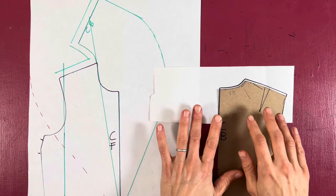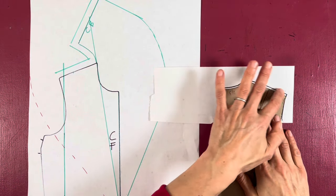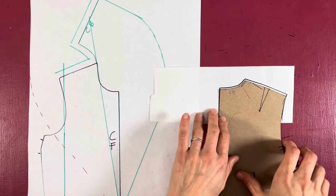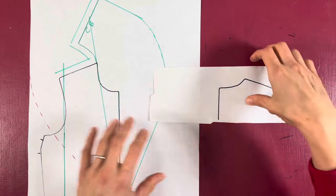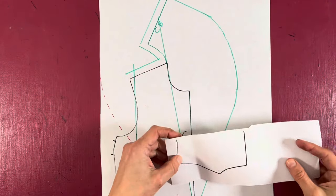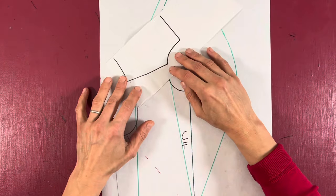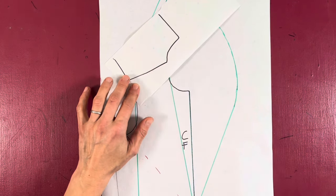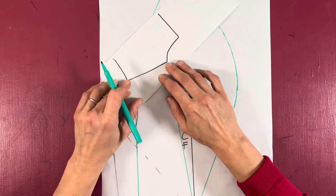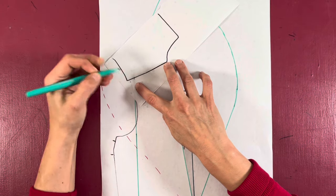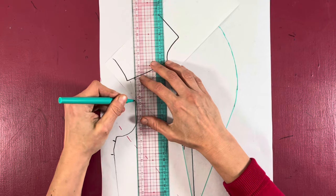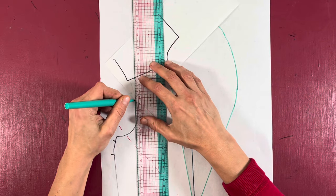On a small separate piece of paper, trace around your back. You only need the top of it. You can now lay your back shoulder onto your front shoulder to